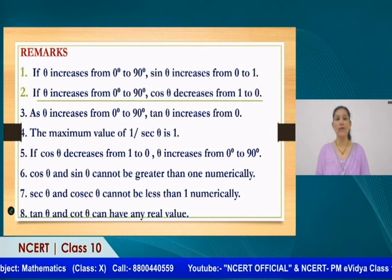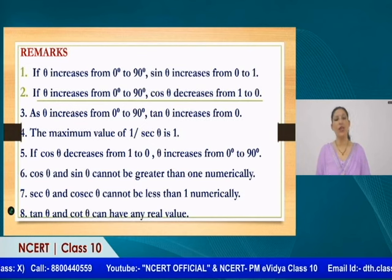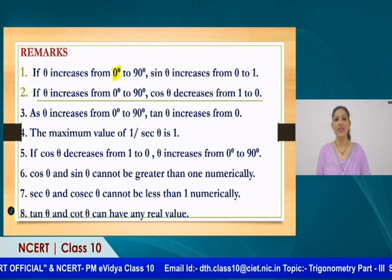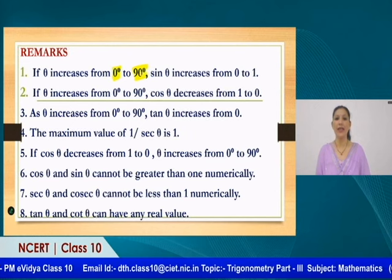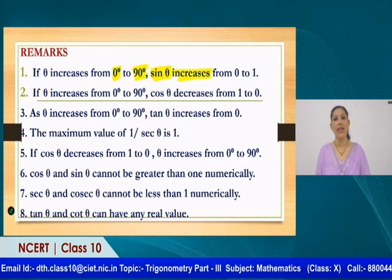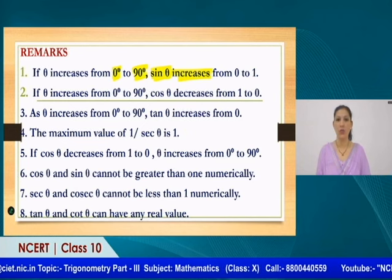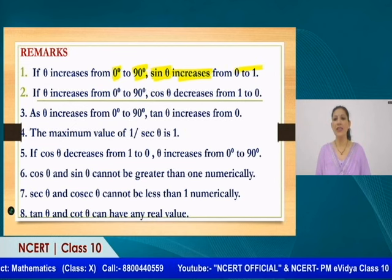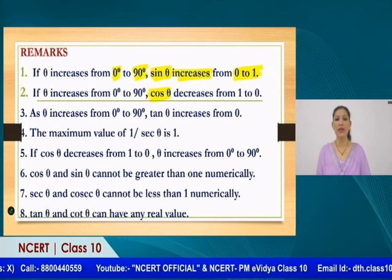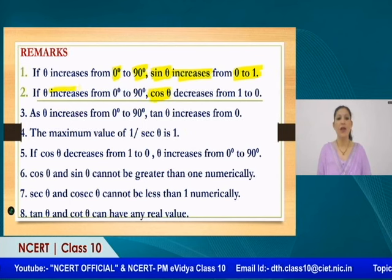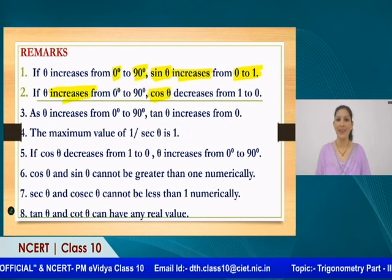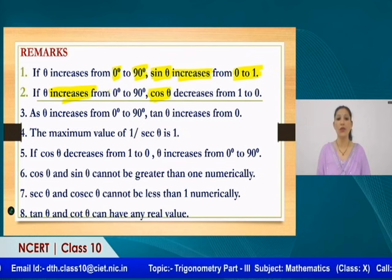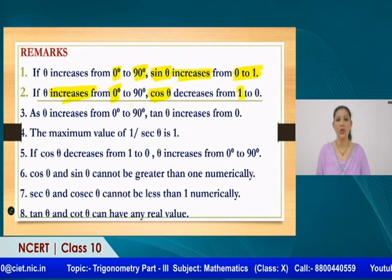Now let us discuss some very important points. As theta increases from 0° to 90°, sin theta also increases — sin 0° = 0, sin 90° = 1, sin 45° = 1/√2. But for cos theta, the relationship is opposite: as theta increases from 0° to 90°, cos theta decreases from 1 to 0, because cos 0° = 1 and cos 90° = 0. Furthermore, if theta increases from 0° to 90°, tan theta increases from 0 to infinity.